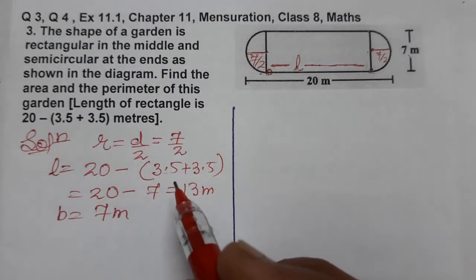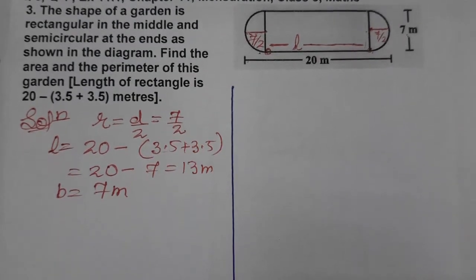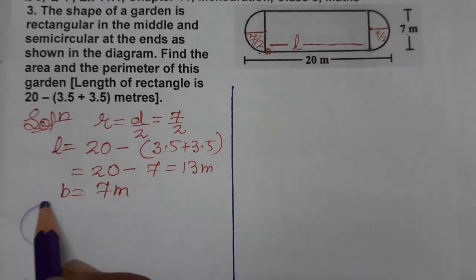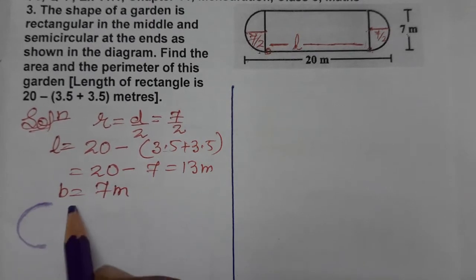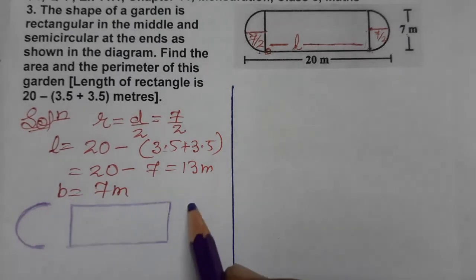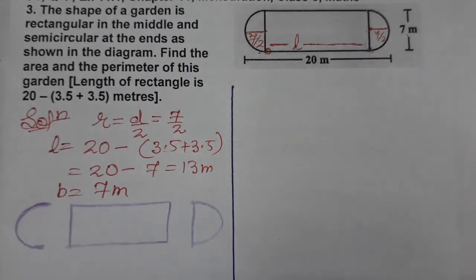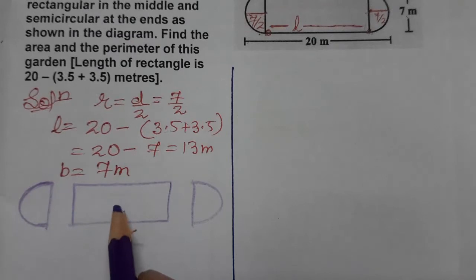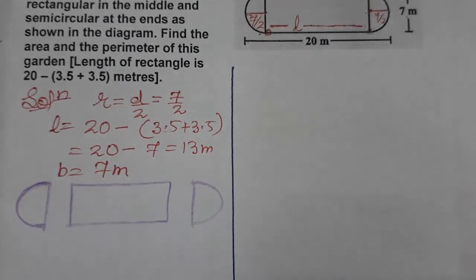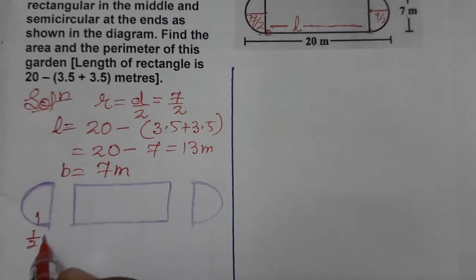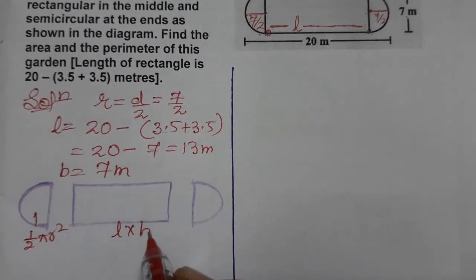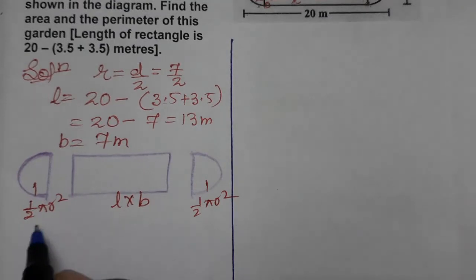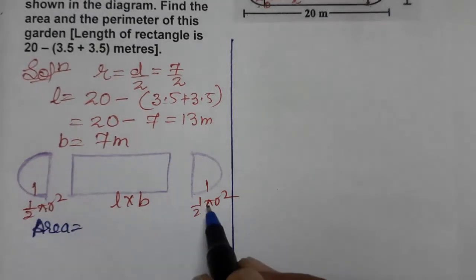Now we need to find the area. We can divide this figure into 3 parts: one semicircle, one rectangle, and one more semicircle. Area equals area of first semicircle plus area of rectangle plus area of second semicircle. That is half pi r squared plus length times breadth plus half pi r squared.